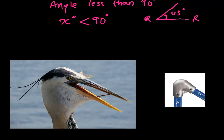See this bird — its beak forms a straight line, and the other portion of the beak is another line. Together they form an acute angle. It may be around 20, 30, or 40 degrees — I'm not measuring exactly, just giving a rough idea. But it is less than 90 degrees, so this is a perfect real-life example of an acute angle.